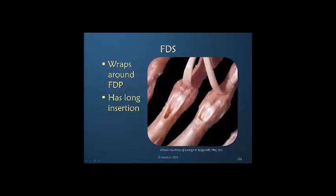The superficialis has a long insertion, as we can see here. The profundus has been pulled out, leaving the tunnel through which it normally resides.